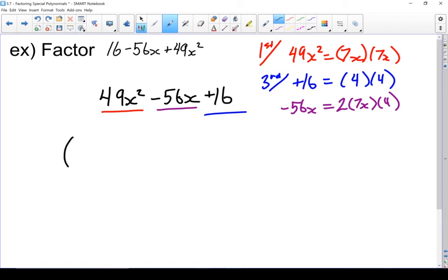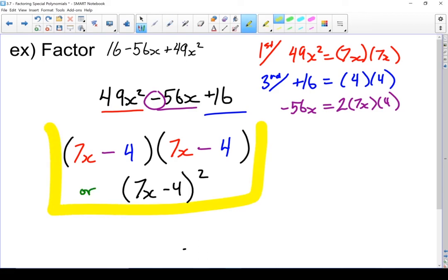I can just rewrite that as my first term, which is 7x. My third term, which is 4. And then I'm going to take the sign from this middle term, which is a negative. And then if I want, I can rewrite it again as 7x minus 4 to the power of 2. Both are perfectly acceptable answers.